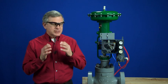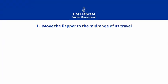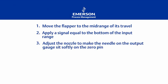We can calibrate the 3582 positioner in just six easy steps. Step one, move the flapper to the midrange of its travel. Step two, apply a signal equal to the bottom of the input range. Step three, adjust the nozzle to make the needle on the output gauge sit softly on the zero pin. Step four, increase the input to find the low saturation point. The output needle should move before the input gets to three and a half.